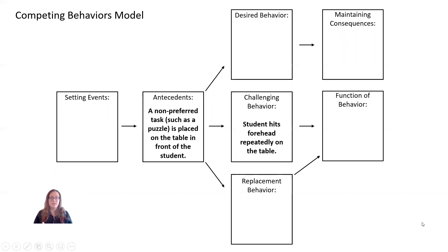The next thing we want to look at is the antecedents to that behavior. The antecedent is what happens right before the behavior occurs, and this is all based on our observation data. An antecedent might be that a non-preferred task, such as a puzzle, is placed on the table in front of the student — that's happening right before our challenging behavior, which is why we have an arrow that links them.